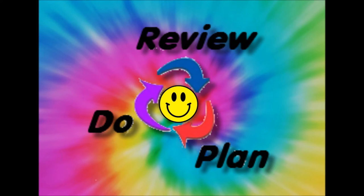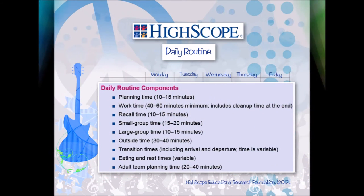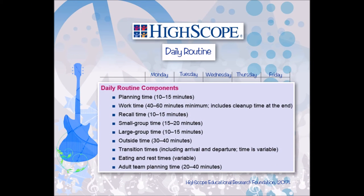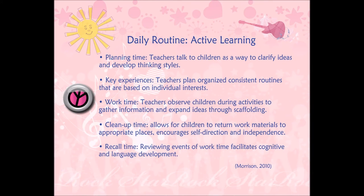High Scope Curriculum consists of three key components: planning time, work time, and recall time — also known as plan, do, and review. Children make choices about what they will do, carry out their ideas, and reflect on their activities with adults and peers.